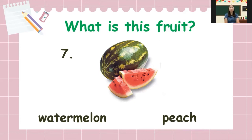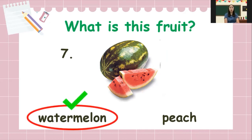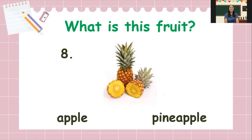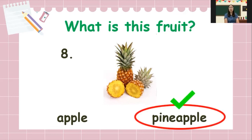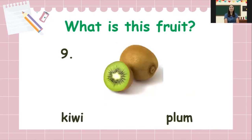Number seven, what is this fruit? Is it watermelon or peach? The answer is watermelon. Number eight, what is this fruit? Is it apple or pineapple? The answer is pineapple. Number nine, what is this fruit? Is it kiwi or plum? The answer is kiwi.